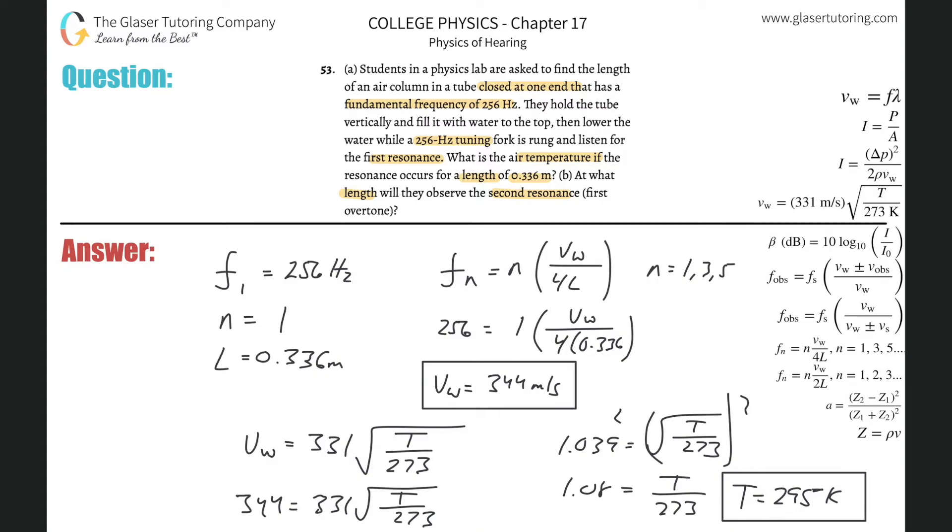So really what they're asking us in letter B is they're asking us to find the length that they will observe for the second resonance. So in other words, what we have to do now is we have to plug in the values that we know. And we're dealing with the same formula. The frequency of harmonic n is equal to the nth harmonic multiplied now by the velocity of the sound through that particular medium divided by four times the length.